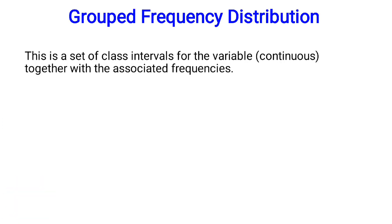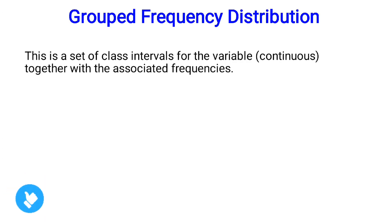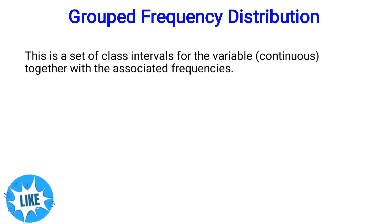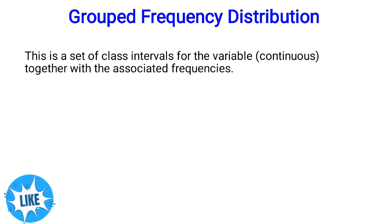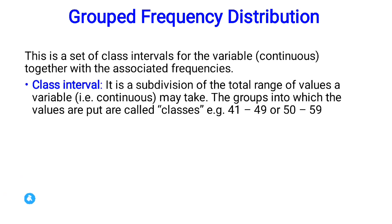For ungrouped frequency distribution, the variables are not in classes, so we have a discrete variable. But for grouped frequency distribution, we have a continuous variable because the data or frequencies are within classes. Let's be guided about this, together with the associated frequencies.